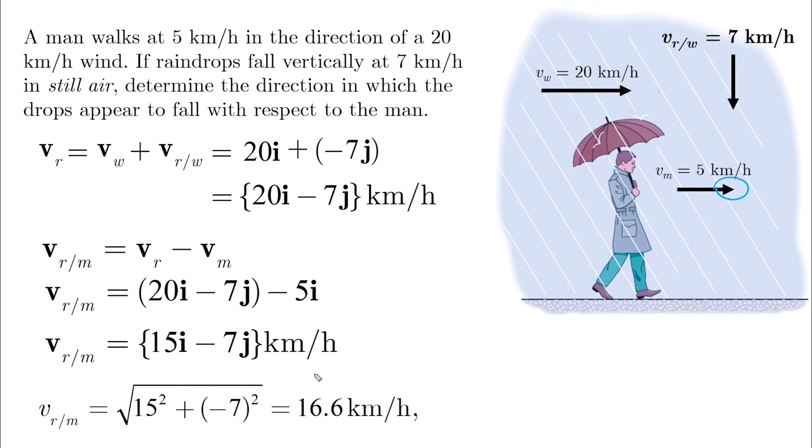This is the magnitude, which we are not interested in. And here's the direction, we have 15i positive and 7 in the negative j. So tan inverse y over x gives us 25 degrees.